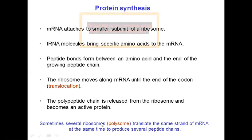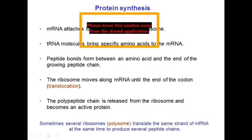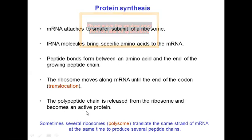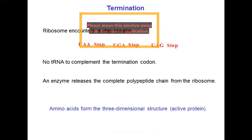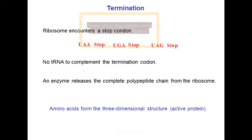The peptide chain is released from the ribosome and becomes an active protein. Multiple ribosomes can work simultaneously — these are called polysomes. They translate the same strand of messenger RNA at the same time to produce several peptide chains. The same messenger RNA molecule can have several ribosomes attached to it, so you have proteins that are simultaneously being generated. Once the ribosome encounters the stop codons — UAA, UGA, or UAG — which have no corresponding amino acids, an enzyme will release the complete polypeptide chain from the ribosome.